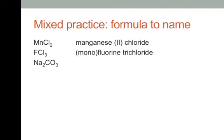Next example: we've got two sodiums with what you should recognize as the carbonate ion. Sodium is in the first column, so you don't need a Roman numeral — we know it's plus one, so it's just sodium carbonate. The two isn't mentioned in the name but is implied: sodium is +1 and carbonate is 2−, so you need two sodiums with one carbonate.